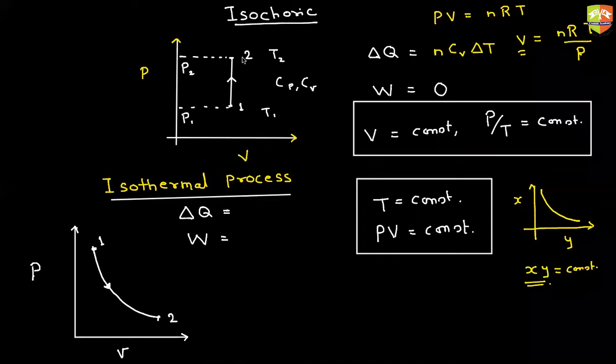The answer is delta Q is not zero. In the isochoric process, the delta Q is NCV delta T. In isobaric process, it is NCP delta T. But we don't know the specific heat capacity for isothermal process.